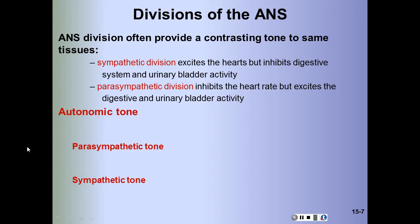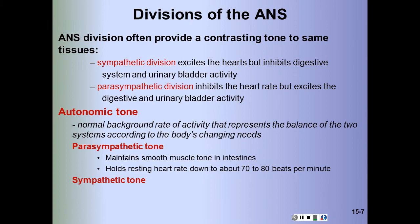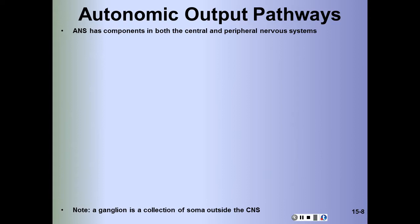Normally both divisions are active and exhibit a background rate of activity called autonomic tone, which shifts depending on the individual's needs. The parasympathetic tone maintains smooth muscle tone in the intestines and holds the resting heart rate down to about 70 to 80 beats per minute. The sympathetic tone keeps most blood vessels partially constricted and maintains blood pressure.